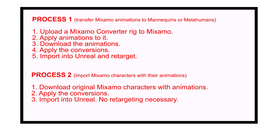I just wanted to clarify that there are two separate processes depending on what you're wanting to work with. If you're wanting to work with Mixamo characters alone, you would do process two. If you're wanting to transfer the Mixamo animations to mannequins or metahumans, then you want to do process number one. The only issue is we really can't do process number one until we've downloaded the converter, so that's why it seems a little out of order. But at least I've shown you the beginning of process two.